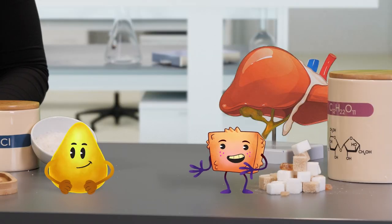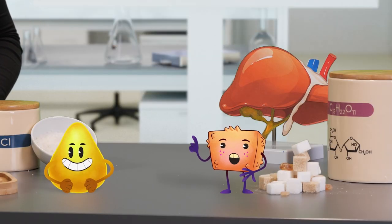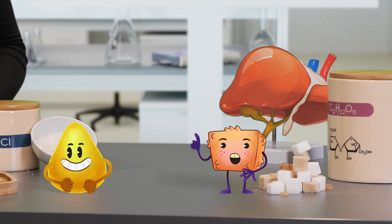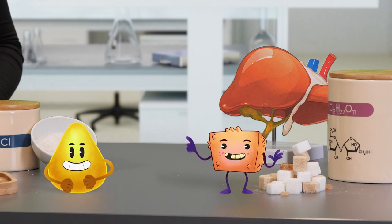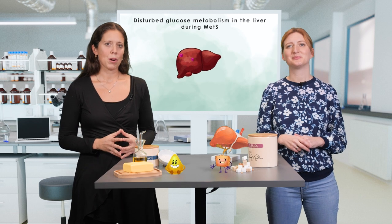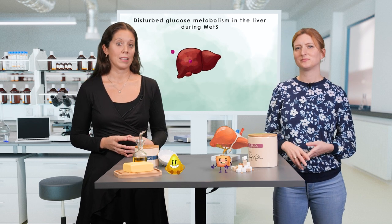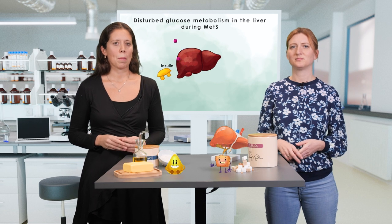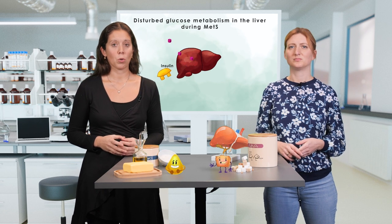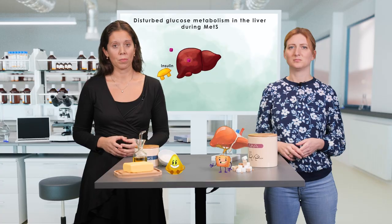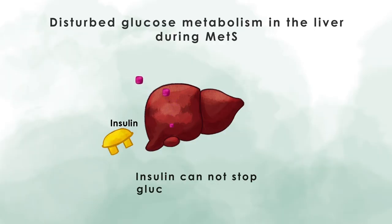We already talked a lot about insulin resistance also affecting the liver in the metabolic syndrome. In individuals with diabetes, the liver produces more glucose than in normal individuals. The insulin-dependent suppression of hepatic glucose production is then impaired. Thus, insulin cannot stop the glucose production from the liver.